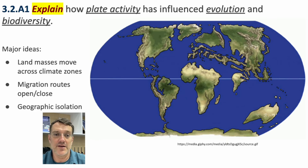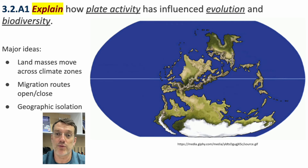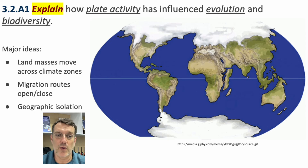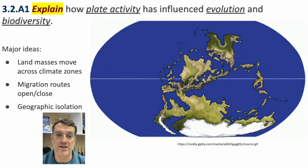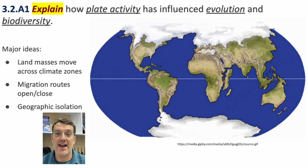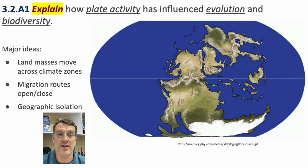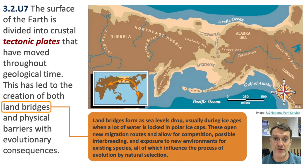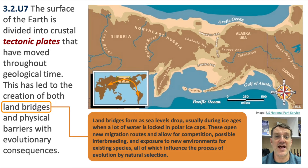You should be able to explain how plate activity has influenced evolution and biodiversity on Earth. Land masses continually move around our planet over many millions and billions of years. As they move, they may migrate from tropical zones into temperate or polar zones, and migration routes change as land masses connect and disconnect. What you need to know for ESS is that as land masses move through different climate zones, and as Earth's climate changes through ice ages and warm spells, migration routes open and close, influencing the genetic makeup of subsequent generations.